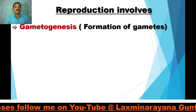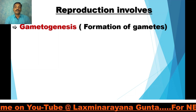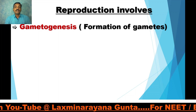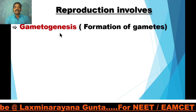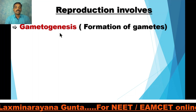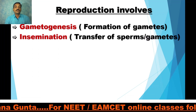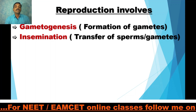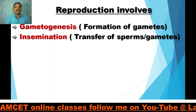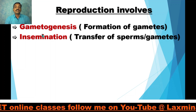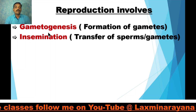Reproduction involves gametogenesis, which is the formation of gametes. In males it is called as spermatogenesis and in females it is called as oogenesis. After the gametes are formed they may be transferred to the female genital tract, and this transfer of sperms or gametes is called as insemination.